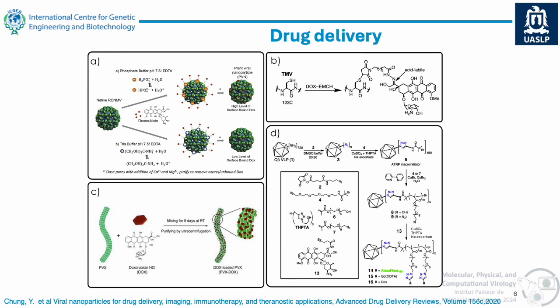The Steinmetz lab at UC San Diego has modified plant viruses to incorporate doxorubicin under different conditions. They can have high or low levels of surface-bound doxorubicin and can really regulate how much you add just by changing the buffer used. They are also using potato virus X to add doxorubicin, which is used for cancer treatment. By simply mixing for five days at room temperature and then purifying to eliminate excess drug, you load this filamentous virus. And for some reason, plant viruses when injected into the vascular system are preferentially taken up by tumor cells.